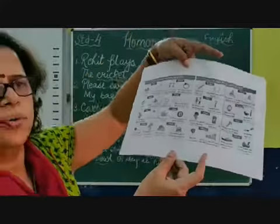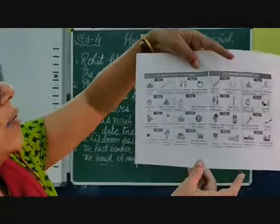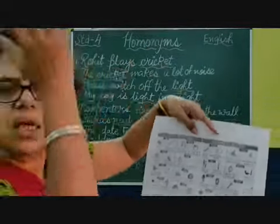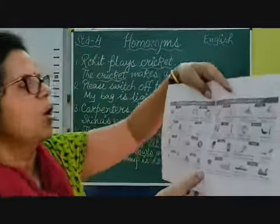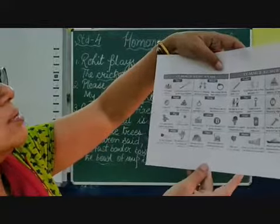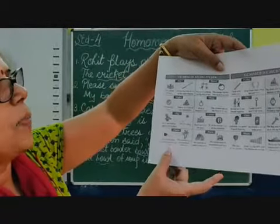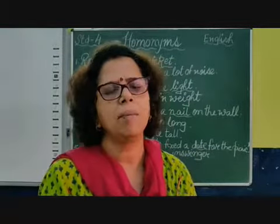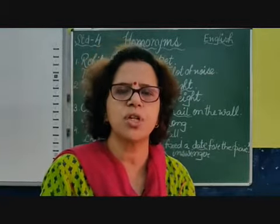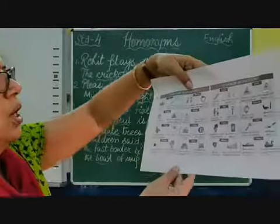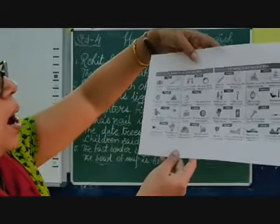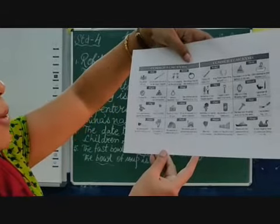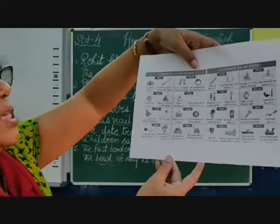Fly — fly the insect, and fly the action: 'Let's fly the kite.' 'A fly was buzzing against my window.' Palm — the palm of your hand, this part of your hand, and the palm tree. 'He held the bird gently in the palm of his hand' and 'The coconut palm is a native of Malaysia.'